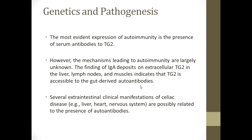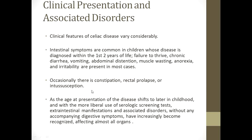Several extra-intestinal clinical manifestations of celiac disease — for example affecting the liver, heart, and nervous system — are possibly related to the presence of autoantibodies. Clinical features of celiac disease vary considerably. Initial intestinal symptoms are common in children whose disease is diagnosed within the first two years of life.